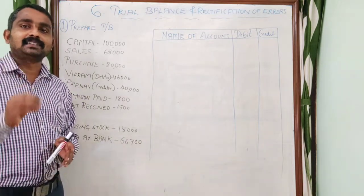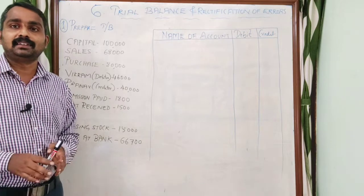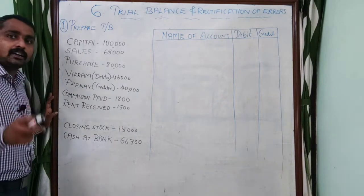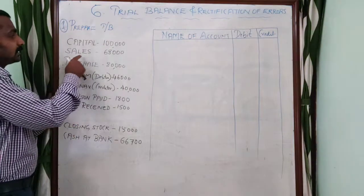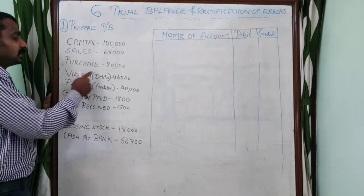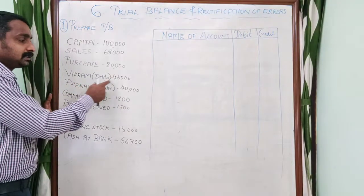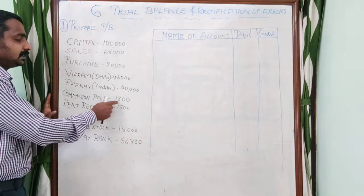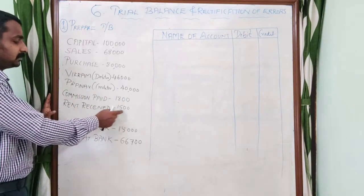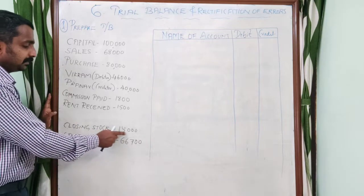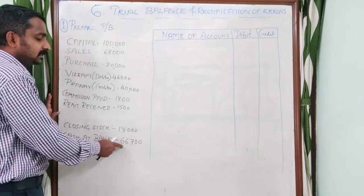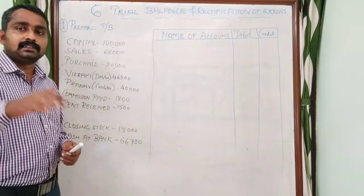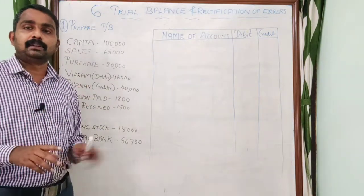In the previous class, you were asked to prepare a trial balance. The account balances are: Capital 1 lakh, Sales 68,000, Purchase 80,000, Vikram (debtor) 46,000, Pranav (creditor) 40,000, Commission paid 1,800, Commission received 1,500, Closing stock 15,000, Cash at bank 66,700. Write these account balances on paper and solve the problem along with me.